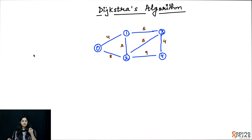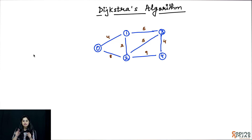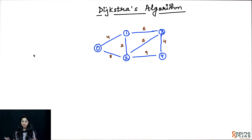Given a source, given the start, hume us node se, us vertex se, baqi vertices tak ka shortest distance kaise calculate karne waale hai, hum discuss karne waale hai, obviously via Dijkstra.